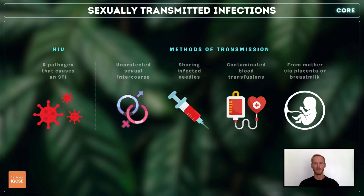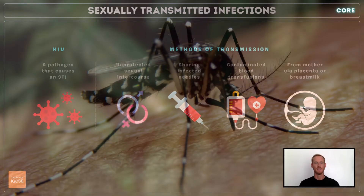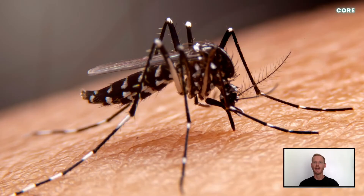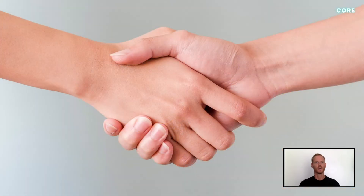HIV may also be passed from mother to fetus through the placenta during pregnancy, and from mother to baby via breast milk. It's important to note that HIV cannot be transmitted by mosquitoes or other insects, or through casual contact like shaking hands or sharing utensils.